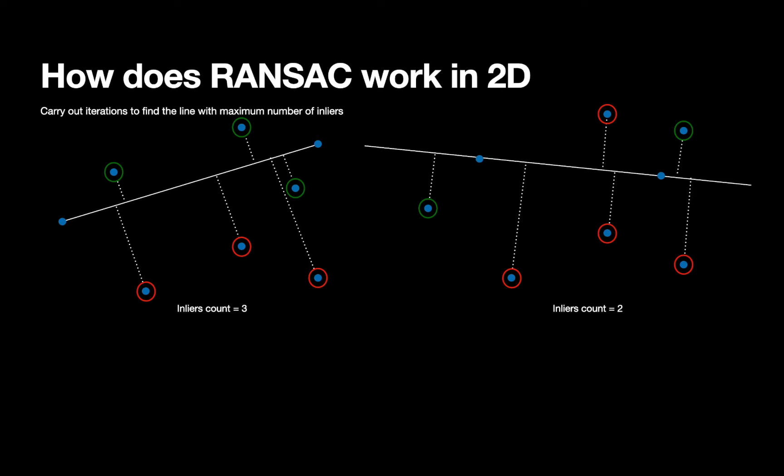In this case, the number of inliers are three. Through successive iterations, we find two random points, find the equation of the line connecting them, and then count the number of inliers corresponding to that line. The line which has the maximum number of inliers finally becomes the equation of line obtained through RANSAC. Now let's see RANSAC in action through a Python code.